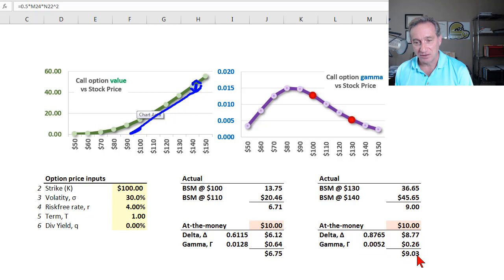So that gamma measure comes into the delta gamma approximation of the change, where here I've only used the $10 change in the stock price to estimate the change in the option value. That's option gamma. If the video was helpful, please subscribe to the channel, and we'll see you next week. Thank you.